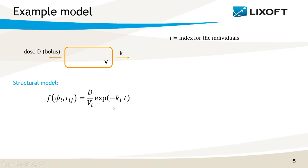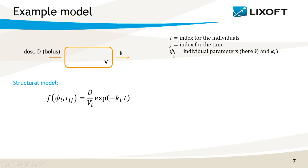When I know Vi and Ki, I can calculate the predicted concentration at any time T. The times at which it is important to have a prediction are the times of observations of the dataset, indicated with an index j. I write it as i,j because the observation times can be different for each individual. I call Psi i the individual parameters of individual i — in this example, Vi and Ki together as a vector. This is only the structural part of the model.